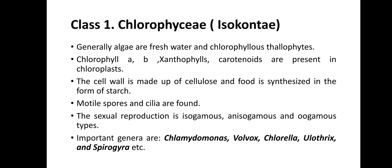The first class is Chlorophyceae, which is the green algae, also called Isoconti. Algae placed under Chlorophyceae are freshwater and called chlorophyllous thallophytes. They have chlorophyll A and B, xanthophylls, and carotenoid pigments. Their cell wall is made up of cellulose and reserve food material is starch. Motile spores and cilia are found. Sexual reproduction is isogamous, anisogamous, and oogamous. I will discuss all these terms in my upcoming videos.